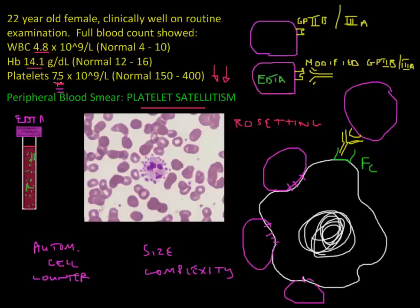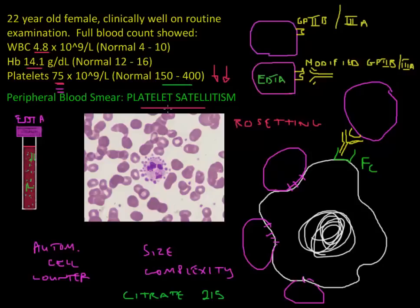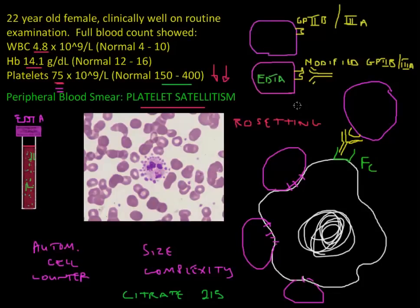The real platelet count is higher than reported. In contrast to platelet clumping, which can happen with different anticoagulants, platelet satellitism only happens with EDTA. If you repeat the blood count with citrate, another anticoagulant, the true platelet count was found to be 215, which is completely normal — the normal range is 150 to 400. When the blood smear was repeated, the patient had no platelet satellitism any longer. This is another example of pseudothrombocytopenia — a falsely decreased platelet count.